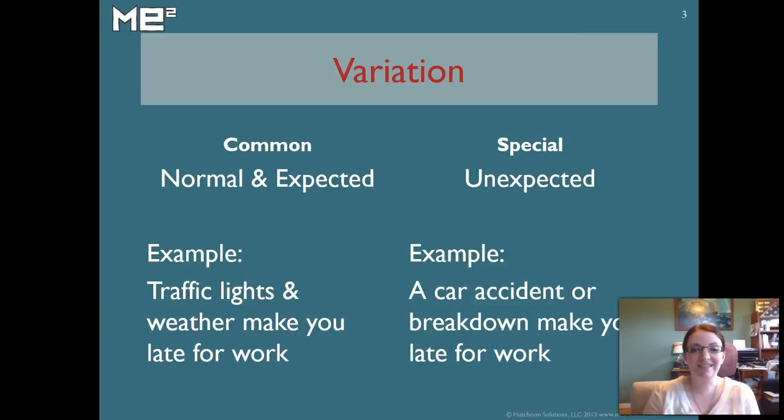Special variation is the unexpected. It's not typical. It's an anomaly or a sign that something's broken. For instance, getting in a car accident or having your car break down on your way to work changes the length of your commute because it's a special cause of variation. It's something that's abnormal. You didn't expect it to happen.